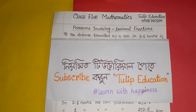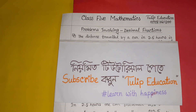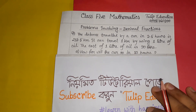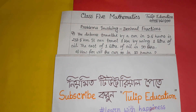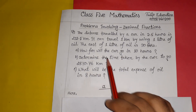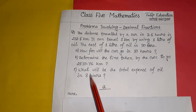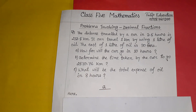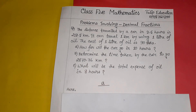Welcome to my math presentation. This is CM Imran and you are watching television. Today I will discuss the mathematics of Class 5 relating to decimal fractions. The problem is: the distance travelled by a car in 3.5 hours is 213.5 kilometers. It can travel one kilometer using one liter of oil. The cost of one liter of oil is 90 taka. We have to find: how far will the car go in 10 hours? Second, determine the time taken by the car to go 2870.76 kilometers. Third, what will be the total expense of oil in 8 hours?